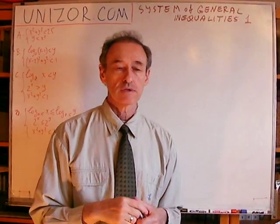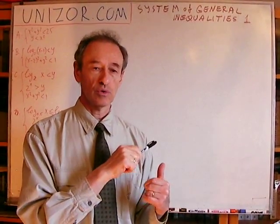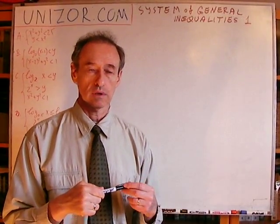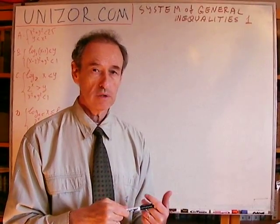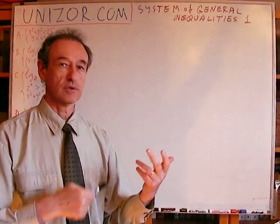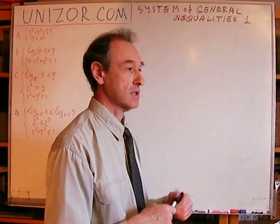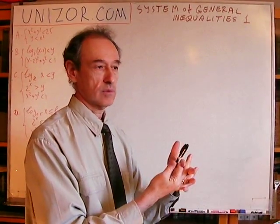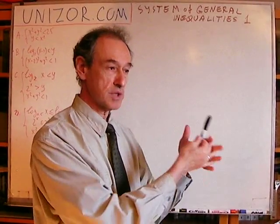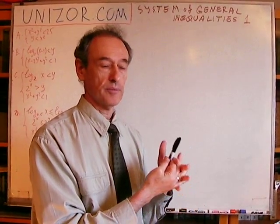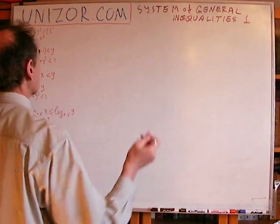The approach we've used is the same as we'll use for all other problems. First, instead of the inequality, draw the graph of the corresponding equality. Then choose which side of the curve belongs to the inequality. Finally, intersect whatever areas you've received from each individual inequality.